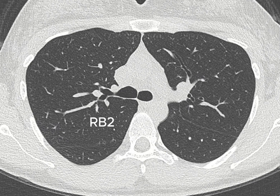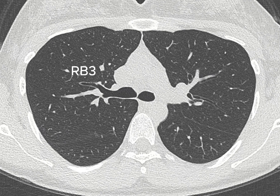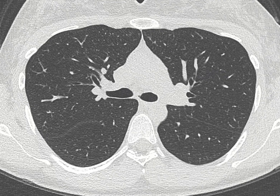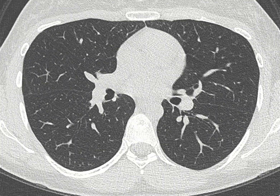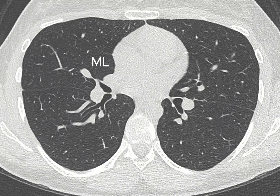Next is the RB2, the dorsal branch of the right upper lobe. It has a more longitudinal appearance because of its dorsal direction. Then the RB3, which has a quite similar appearance to the RB2 but in the ventral direction. As we travel down the intermediate bronchus, we reach the ostium of the middle lobe bronchus. And opposite the middle lobe bronchus, as you know from bronchoscopy, we can see the RB6, the apical segment of the lower lobe.